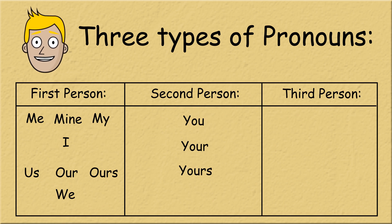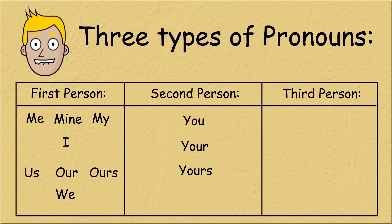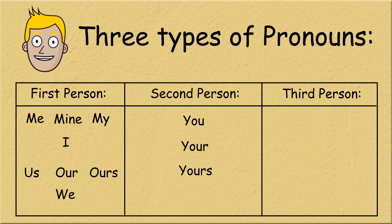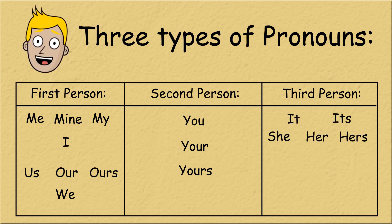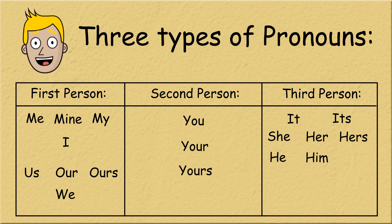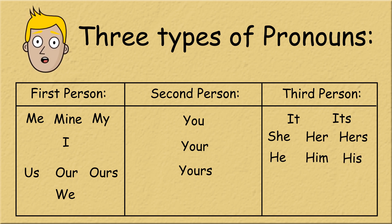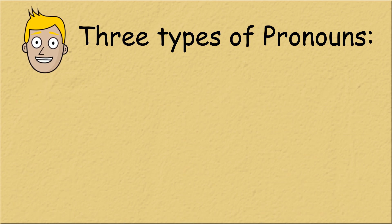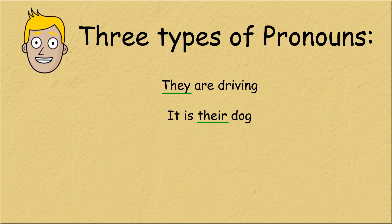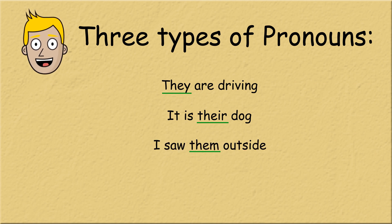The final type of personal pronouns we have are third person pronouns. We use them when referring to someone or something that is neither you nor I. They include the singular pronouns it, its, she, her, hers, he, him and his, and the plural pronouns they, their, theirs and them. Some examples are: they are driving, it is their dog, I saw them outside.